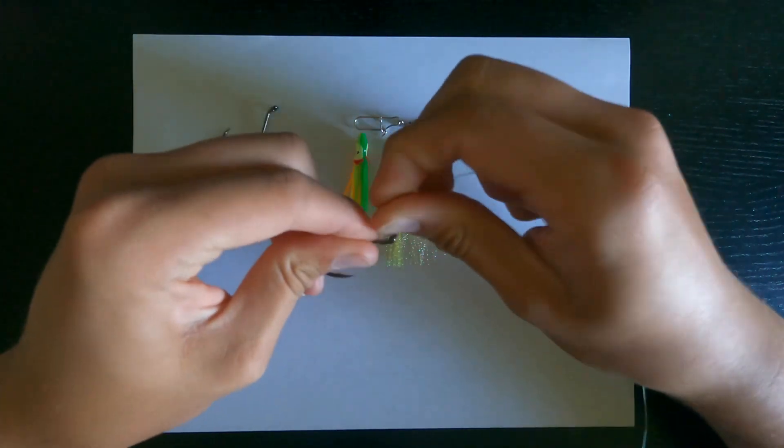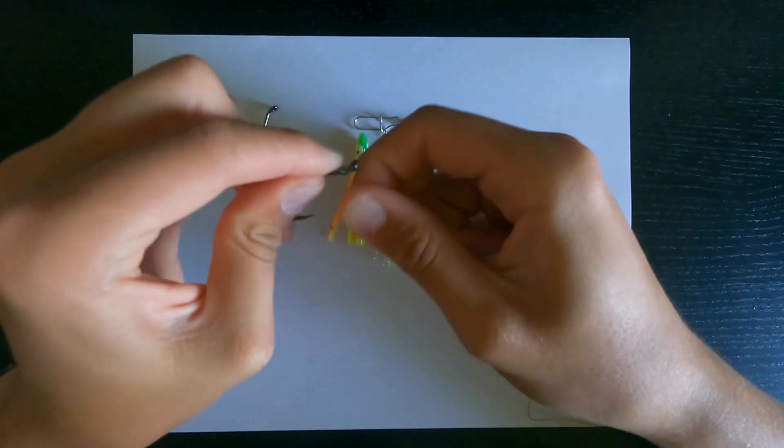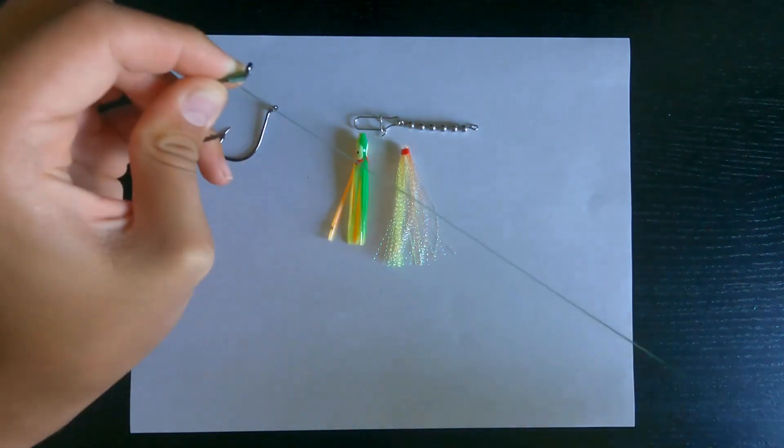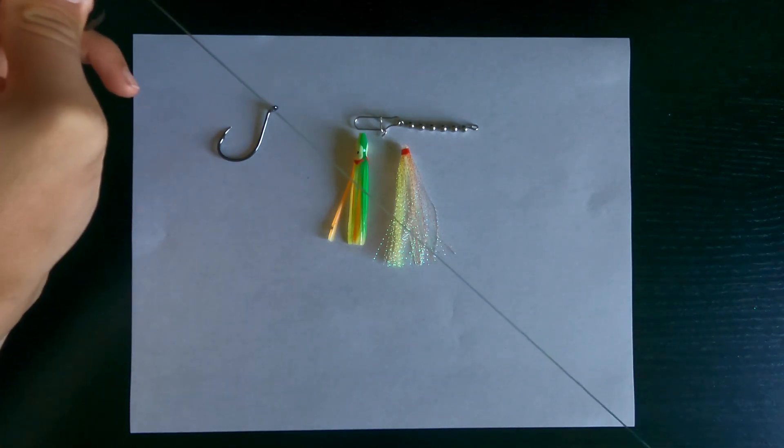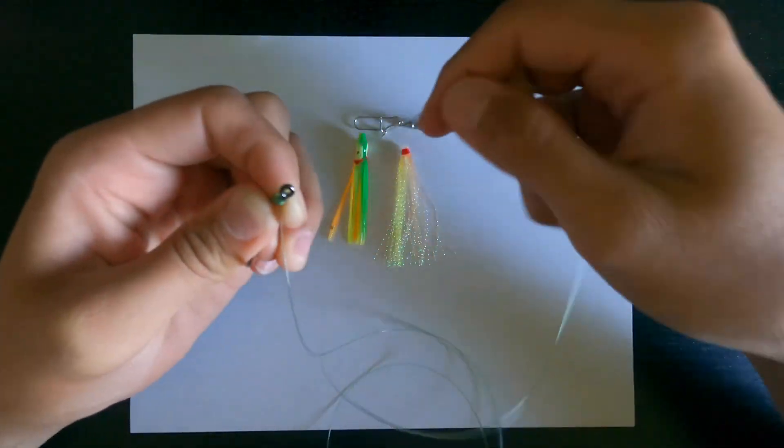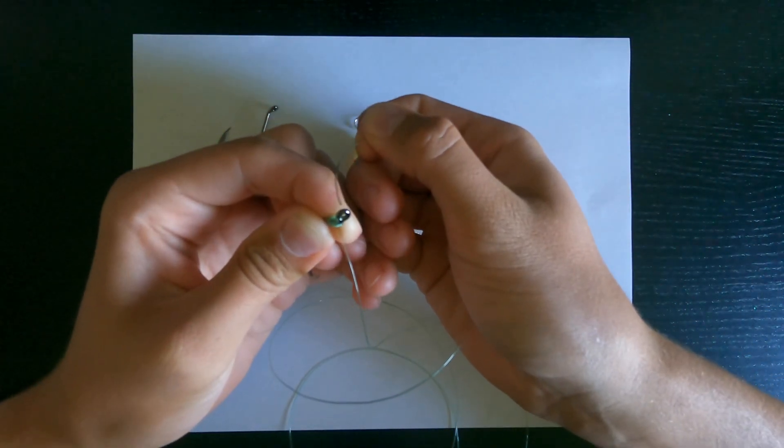And then I'm going to give it eight wraps around that line. So I'm going to go one, two, three, four, five, six, seven, eight. I'm going to grab all the way to the other end of my line. I got the other end here and then this time instead of going down I'm going to go up through the eye.